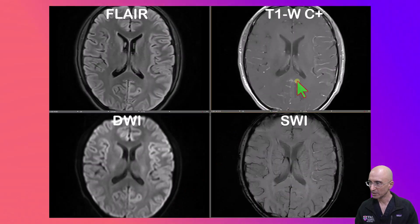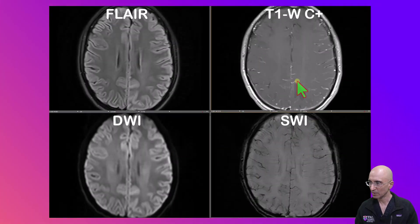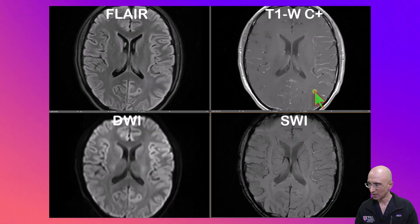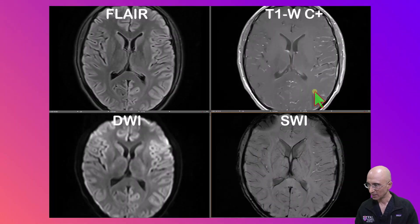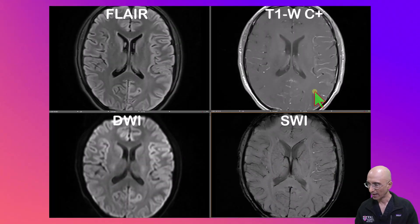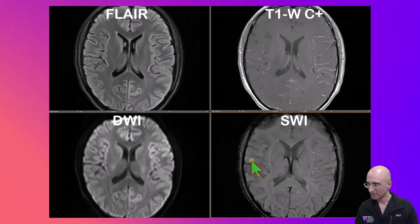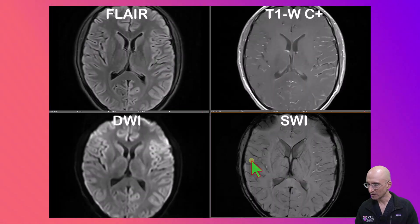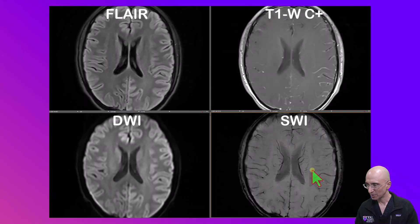Also, following administration of intravenous contrast, you can clearly identify asymmetrically increased leptomeningeal enhancement in the left cerebral hemisphere. On the SWI sequences, you can clearly identify hyperintense vessels in the left cerebral hemisphere which is asymmetrically increased compared to the right cerebral hemisphere, consistent with decreased oxygen extraction, presumably in the setting of increased perfusion.